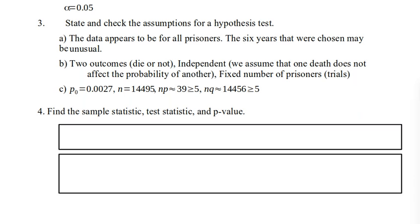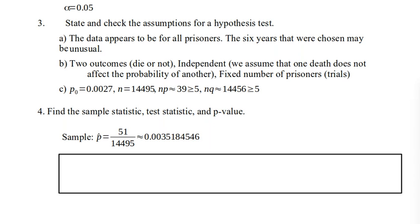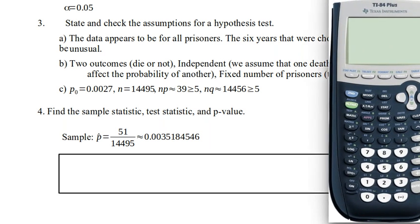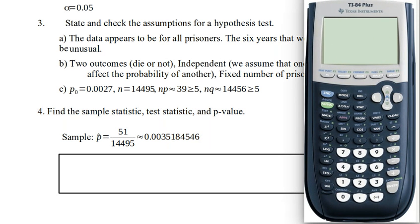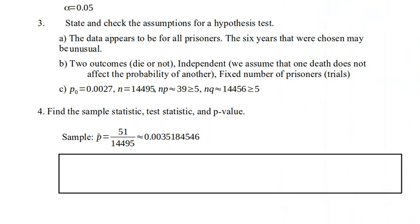The next thing that we're going to do is calculate the sample statistic. And that's a simple matter of finding P hat. So P hat is the proportion of Aboriginal Australian prisoners who died in custody. So if we compute that, we can simply take 51 and divide it by the total number of Aboriginal prisoners, 14,495. And we get a sample proportion of 0.352%. So there's our sample statistic.